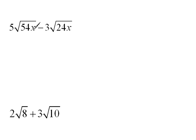Like in this case, we have a 54x underneath the radical and a 24x underneath the radical. Now, at this point right now, we can't combine these because they're not like terms. But we might be able to simplify.